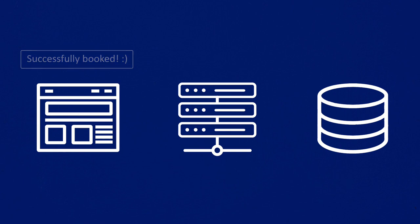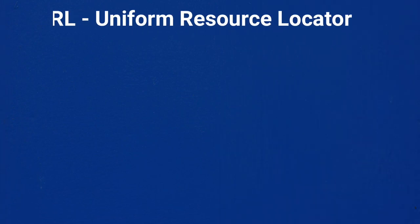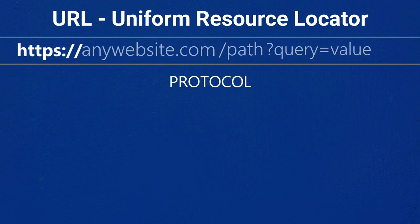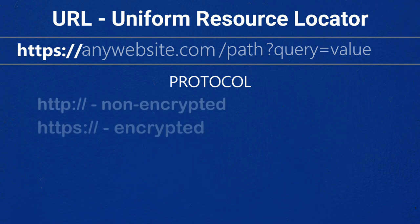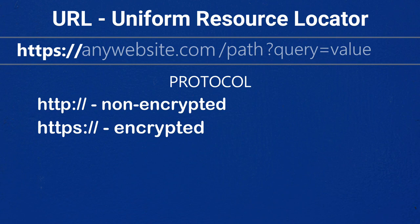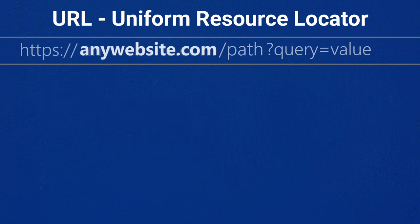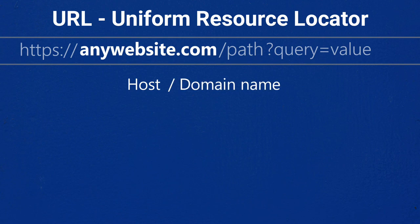Let's see what a typical URL looks like. URL stands for Uniform Resource Locator. At the beginning of the URL we can see the protocol, which declares how a browser should communicate with a web server when sending or fetching a web page or document. URLs most commonly reference web pages using HTTP or HTTPS, but are also used for file transfer with FTP, or email with mailto, and many other applications. The second part is the host, also called the domain name, which is the unique reference to a web page.